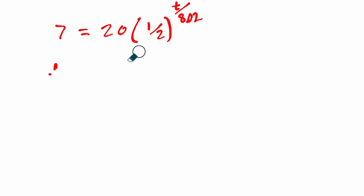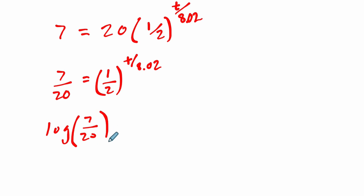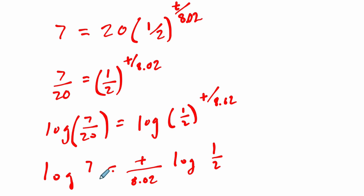T is the number of days. 8.02 is the length of the half-life cycle. So there's another way of doing it. You divide both sides by 20. So 7 divided by 20 equals 1/2 to the T divided by 8.02. And then I'm just going to take the log of both sides. The log of 7/20 is going to equal the log of 1/2 to the T divided by 8.02. This is our exponent. We bring it down in front.